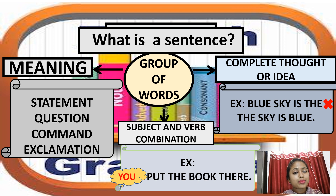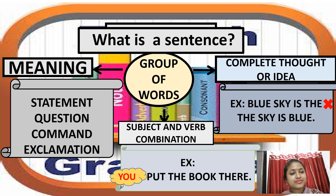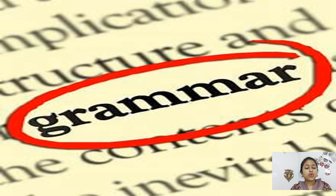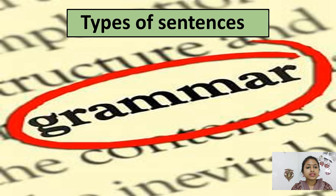Now let's move to the types of sentences and deal with every type separately. There are four types of sentences: declarative sentences, interrogative sentences, imperative sentences, and exclamatory sentences. We will deal with all these sentences one by one.